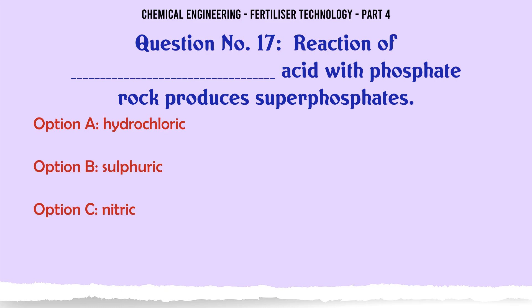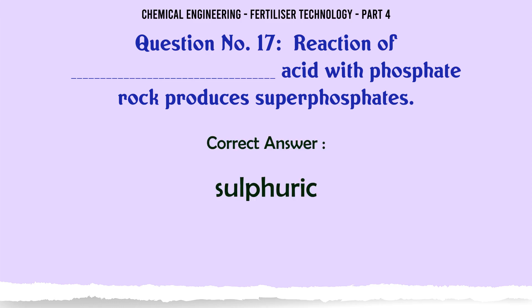Reaction of which acid with phosphate rock produces superphosphates? a. hydrochloric, b. sulphuric, c. nitric, d. phosphoric. The correct answer is: sulphuric.